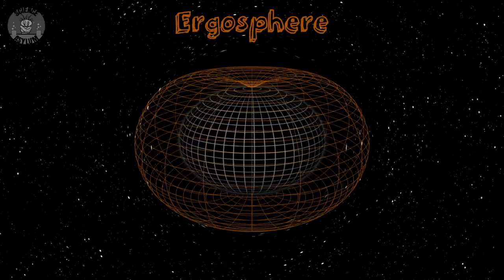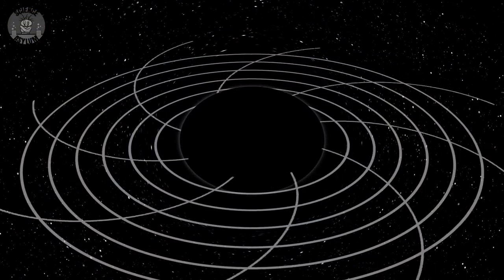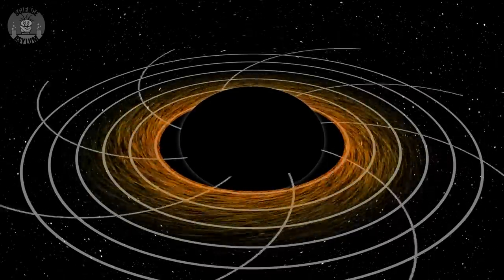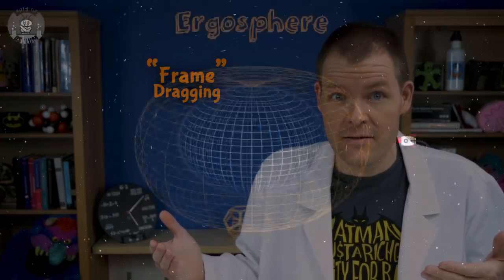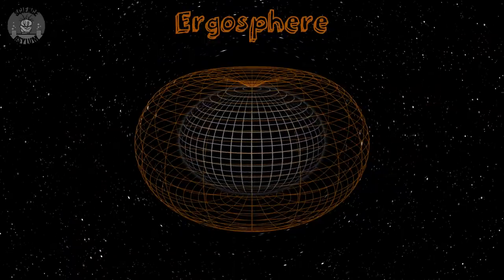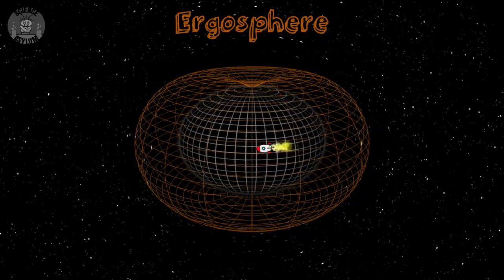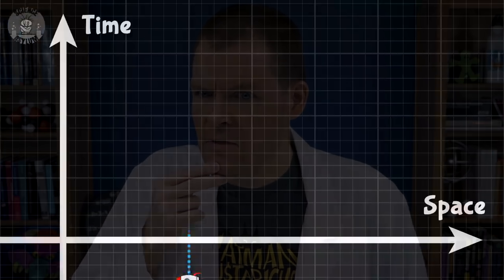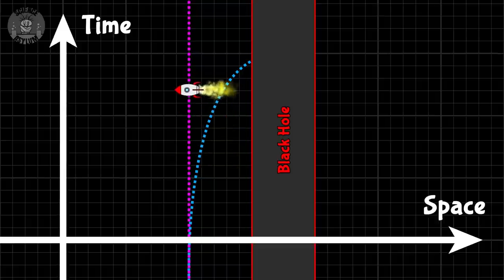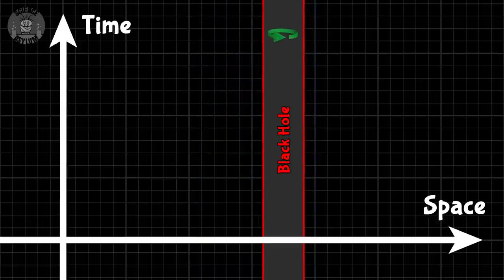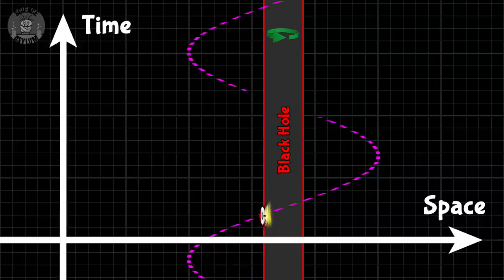The Ergosphere is outside the event horizon. And some weird stuff happens in there. As the black hole spins, it drags the surrounding spacetime along with it, as well as any matter and light in that spacetime. We call it frame dragging, because your entire frame of reference can get dragged along with the black hole's spin. Inside the Ergosphere, your frame is dragged so much that it's physically impossible for you to sit still, no matter how much thrust you have — stationary paths just aren't possible. It doesn't matter how much thrust you have or what direction you point it: you're going to rotate with the black hole no matter what.